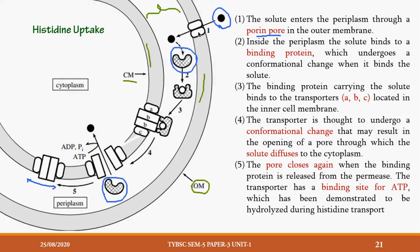Let me do a quick revision. Histidine is present outside the cell. Through the porin pore, it crosses the outer membrane into the periplasm. Once in the periplasm, it binds to the binding protein, which undergoes a conformational change. This complex then interacts with the ABC transporter, causing the transporter to undergo a conformational change, opening the pore. Histidine is released inside the cell. The binding protein returns to its original structure, ATP is broken down to release energy, and the transporter returns to its original position.